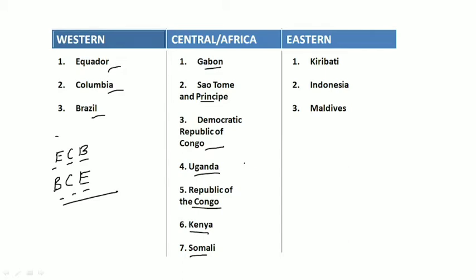The trick for Africa is 'GS Ducks': G for Gabon, S for São Tomé and Príncipe — GS Ducks. Then D for Democratic Republic of Congo, U for Uganda, C for Republic of Congo, K for Kenya, and S for Somalia.